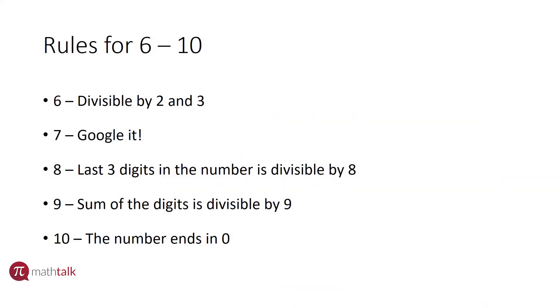So here are the rules for the numbers six through ten. The rule for number six says that a number is divisible by six if it is also divisible by two and three, and so we would check those two numbers. If they both work, six works; if not, six doesn't work.